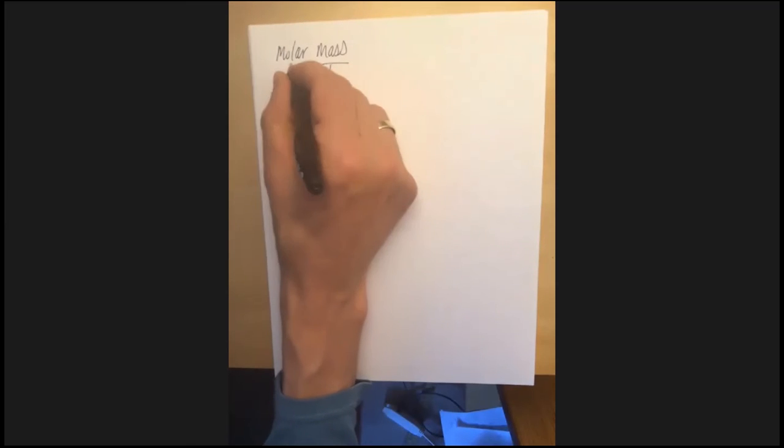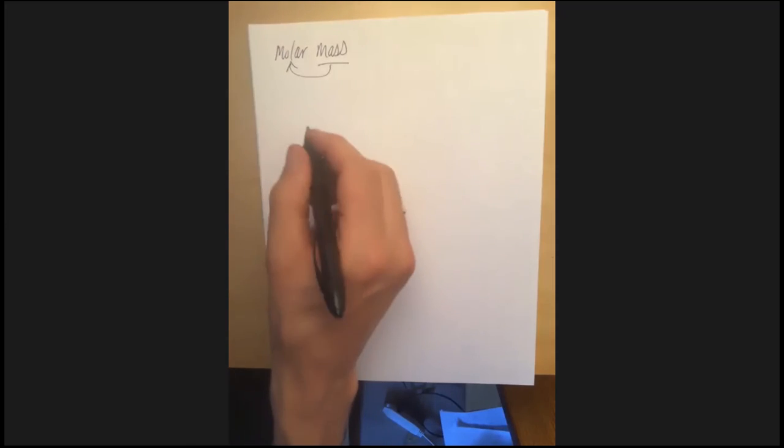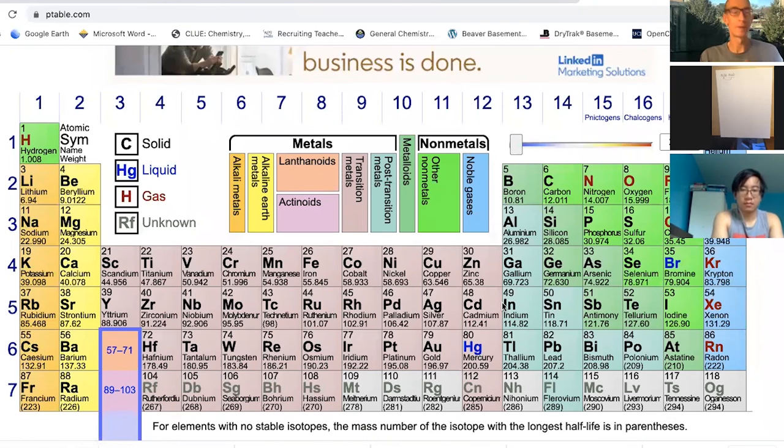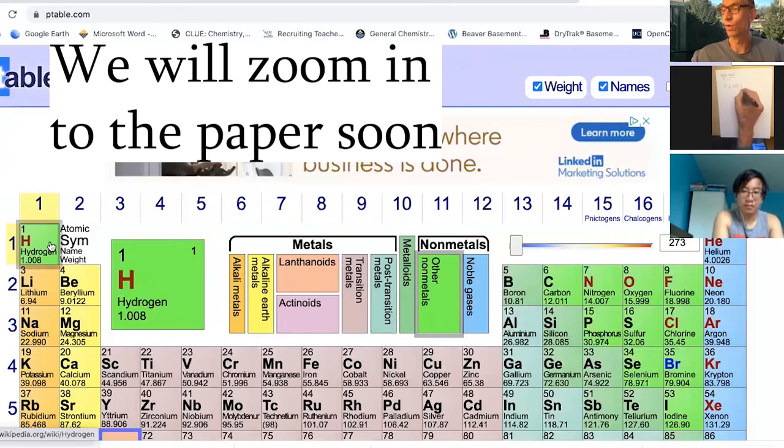So molar mass, like it says, is the mass of one mole. And so if for, like we just saw for carbon, we can take it for a single, for any individual element, you can take it directly off the periodic table. So here's a perfectly nice periodic table I found online. So here's hydrogen in the top left hand corner, and it's got a mass number down there of 1.008. And so that tells us that the molar mass for hydrogen is 1.008 grams per mole.